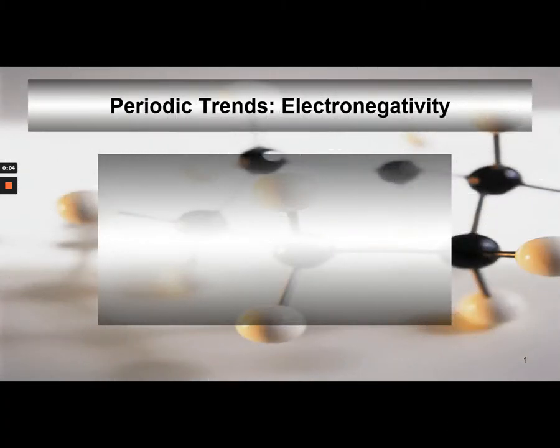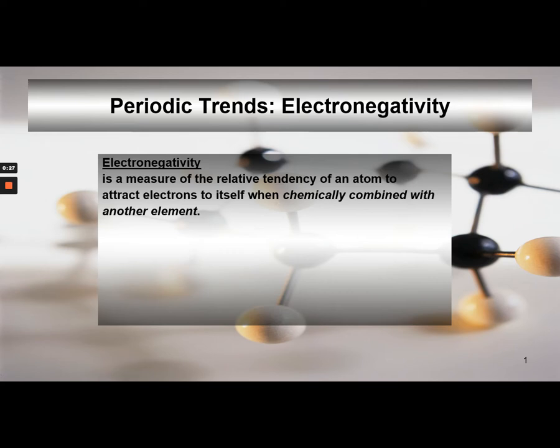The last trend we're going to study today is electronegativity. This is important because at the end of this unit we talk in terms of polar and nonpolar covalent bonding, so this trend determines whether or not a covalent bond is polar or nonpolar. We'll revisit this again later.